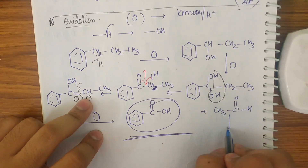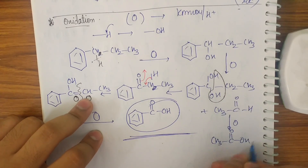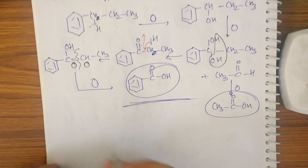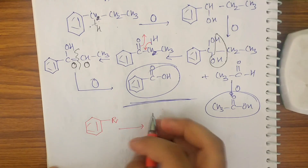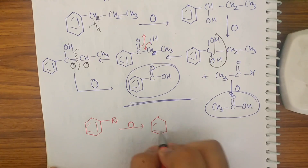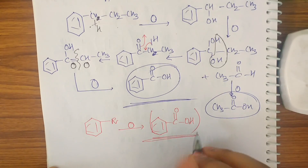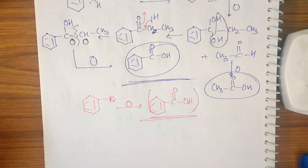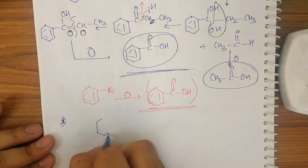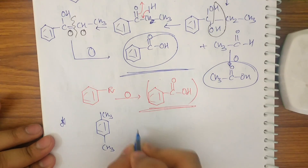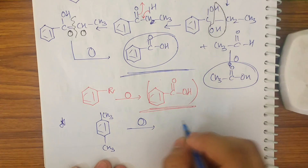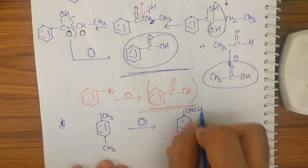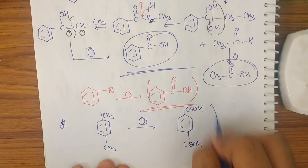CH₃COH can be oxidized further to give acetic acid. The key takeaway is: if benzene has any alkyl group R attached, oxidation with KMnO₄/H⁺ will always give benzoic acid as one of the products. For example, if benzene has two CH₃ groups (o/m/p-xylene), both groups oxidize to COOH, giving a dicarboxylic acid.